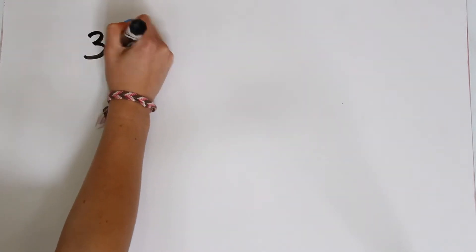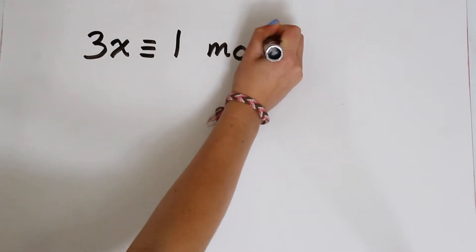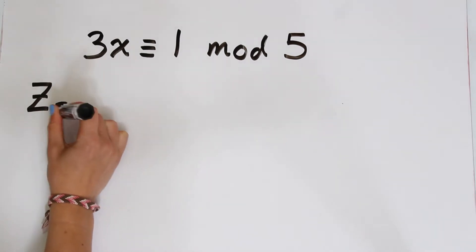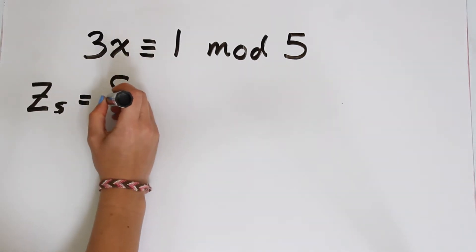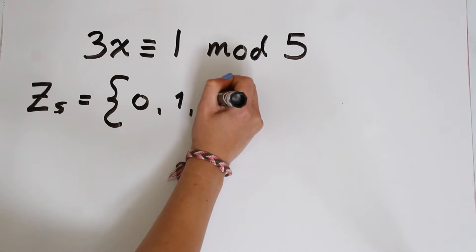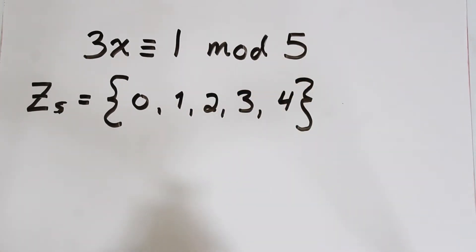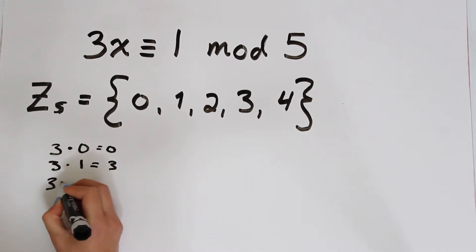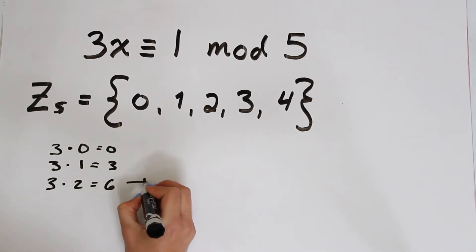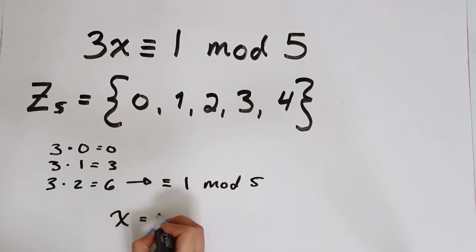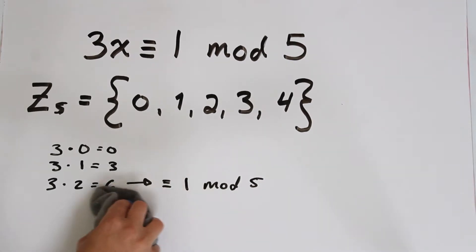So let's consider the congruence 3x is congruent to 1 mod 5. Last time you may recall we talked about z5, the set of remainders mod 5 would be 0, 1, 2, 3, and 4, all the numbers greater than or equal to 0 and less than 5. Well this isn't that many remainders so we can just go through each one and check times 3, and we see that 3 times 2 is equal to 6 which is congruent to 1 mod 5. So therefore x equals 2 satisfies our equation.